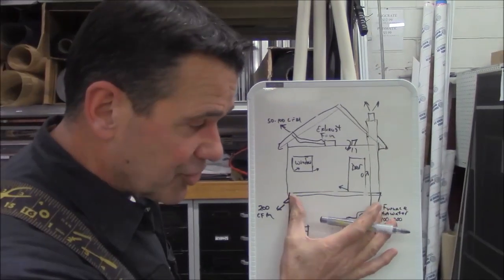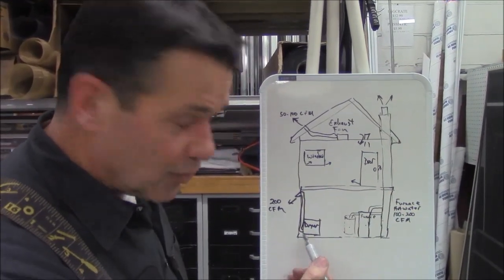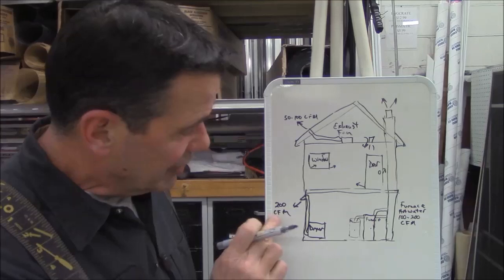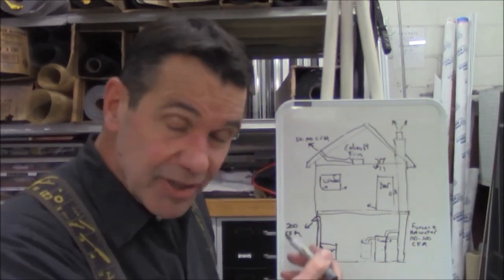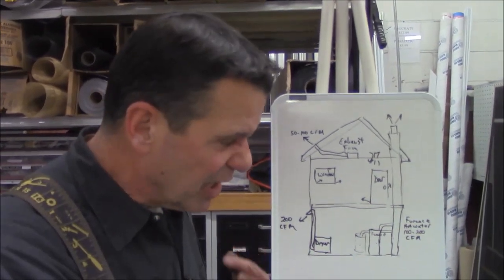Our house is being sucked. Our dryer, when you're drying clothes, it's sending 200 feet per minute. That fan's running, sucking air out of the basement, sending it outside, sucking air out of the house.